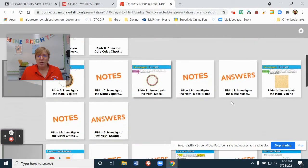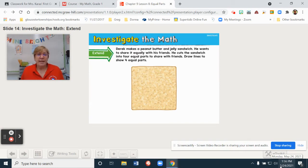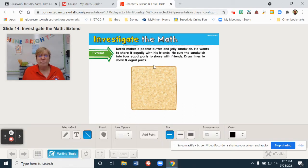Let's continue on to this one. Derek makes a peanut butter and jelly sandwich. He wants to share it equally with his friends. He cuts the sandwich into four equal parts to share with friends. Draw lines to show four equal parts. Now, if you'd like to do this on a whiteboard, make a square and do your version of cutting it into four equal parts. So, I'm going to, once again, first I'm going to start this way. I'm going to cut as best I can equally. Well, I guess that could be better. I should probably go over a little bit more. So, here's... Now, they want four equal pieces. So, if I cut this way...